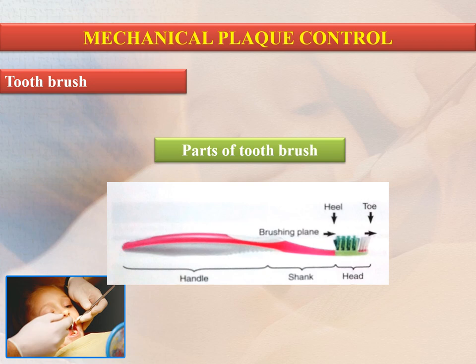The most common aid used for removing plaque is the toothbrush. As shown in the picture, it consists of a handle, shank, and head — consisting of a brushing plane with a heel and a toe. Generally, toothbrushes vary in size and design as well as in the length, hardness, and arrangement of bristles.